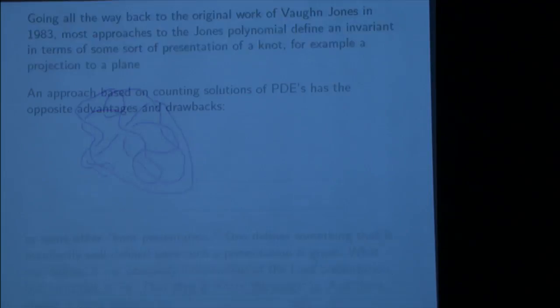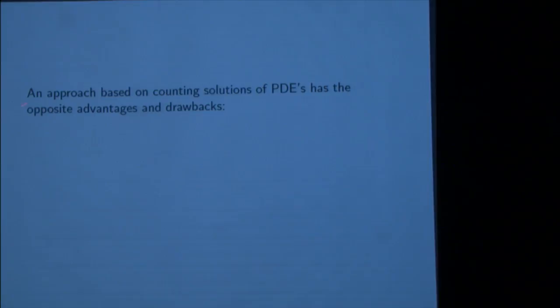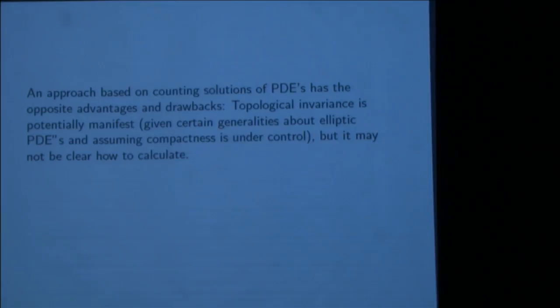An approach based on counting solutions of PDEs has the opposite advantages and drawbacks. Topological invariance is potentially manifest, given generalities about elliptic PDEs and assuming compactness is under control. But it may not be clear how to calculate. The ideal is to have manifest three-, or in the categorified case, four-dimensional symmetry, together with a method of calculation.